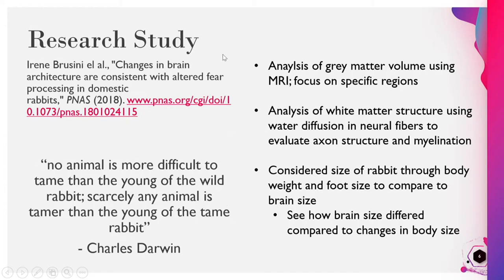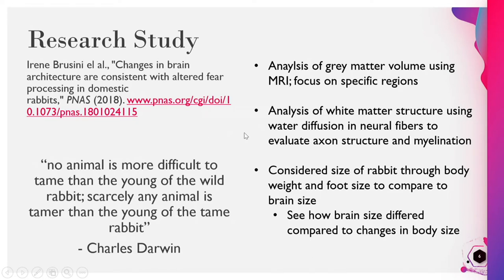In this study, they did an analysis of gray matter volume using MRI, and they did what they called a region of interest study — looking at specific regions in gray matter to pinpoint what places were changed specifically. They also did an analysis of white matter structure using water diffusion to evaluate the amount of myelination and axon structure. They also considered the size of the rabbits in two different ways to see how that compared to brain size.